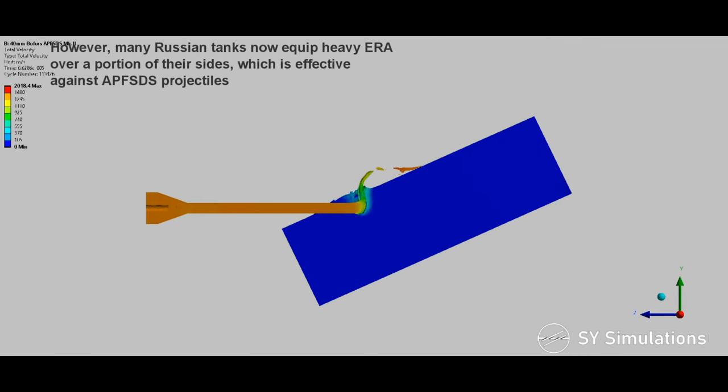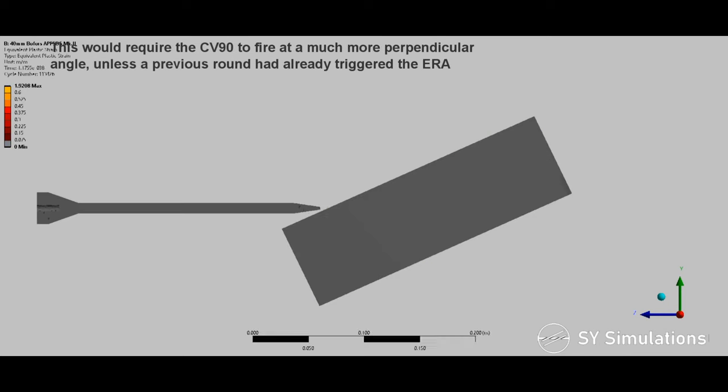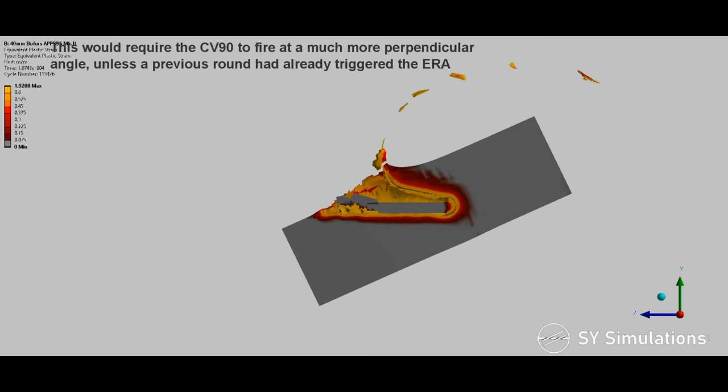However, many Russian tanks now equip heavy explosive reactive armor over a portion of their sides, which is effective against APFSDS projectiles. This would require the CV-90 to fire at a much more perpendicular angle unless a previous round had already triggered the ERA.